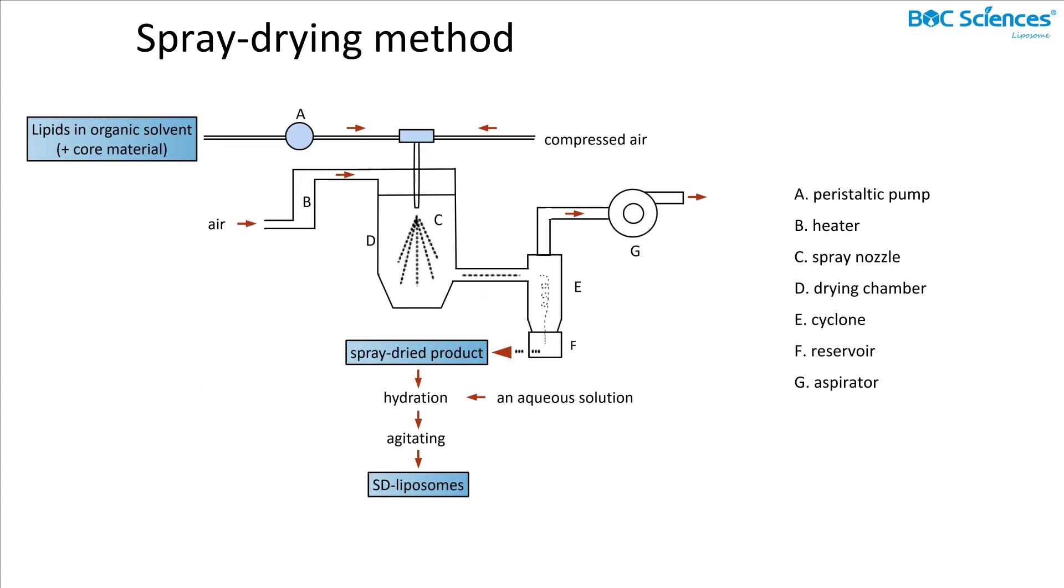Sixth, the spray-drying method. The spray-drying method has been considered a rapid single-step strategy for the large-scale production of liposomes. In using this approach, lipids and mannitol were dissolved in an organic solvent such as chloroform, and the suspension was then spray-dried using a spray dryer. Since the prepared spray-dried product was very amorphous in nature, it could be easily hydrated with an aqueous solution, and liposomes were formed spontaneously by the agitation.